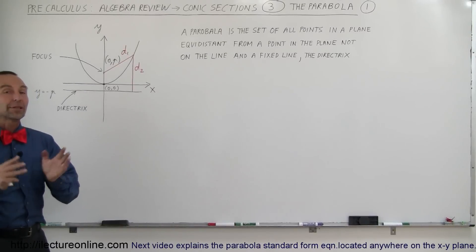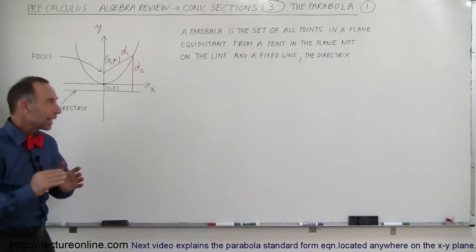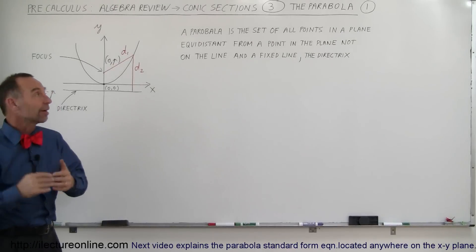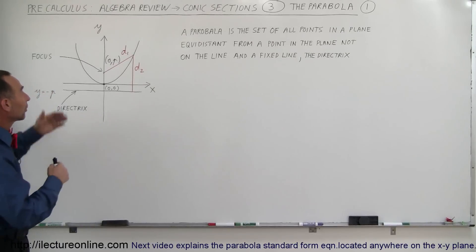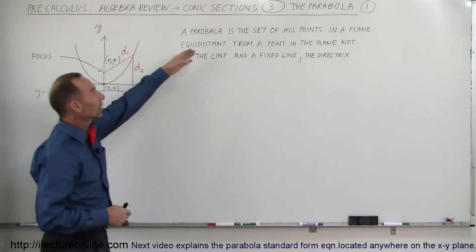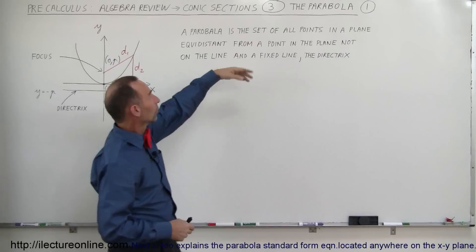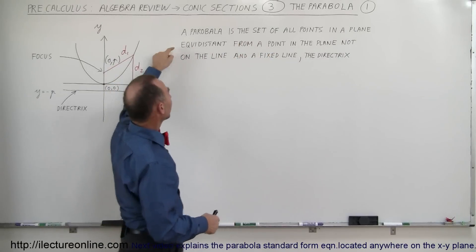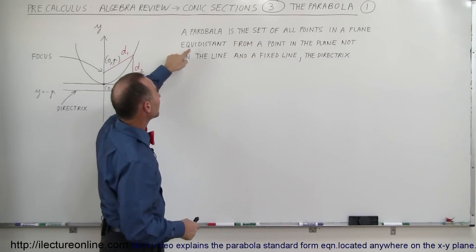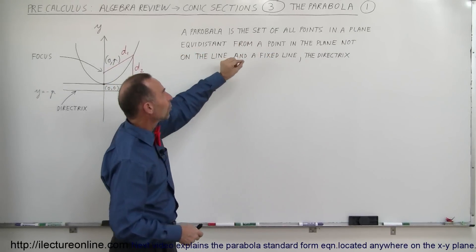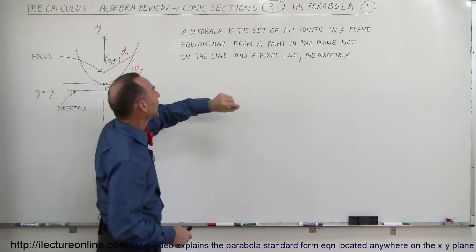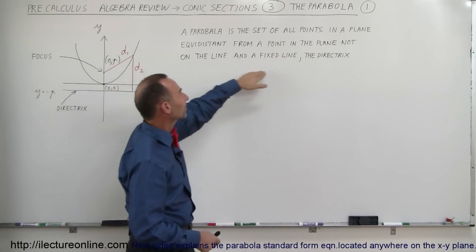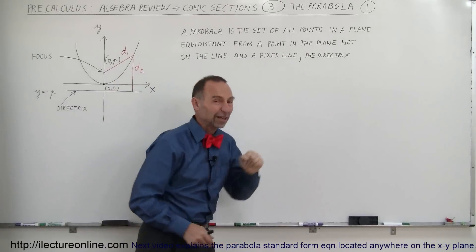Welcome to ElectronLine. Here we're going to take a closer look at the parabola from the basic definition that a parabola is the set of all points in a plane that is equidistant from a fixed point in the plane, not on the line, and a fixed line called the directrix.